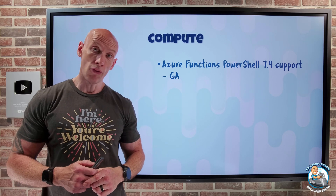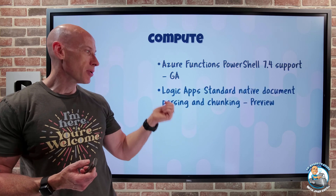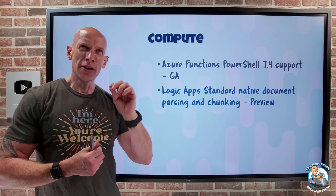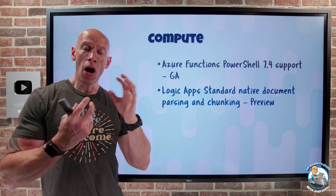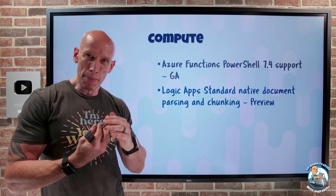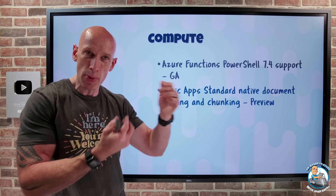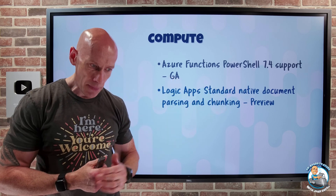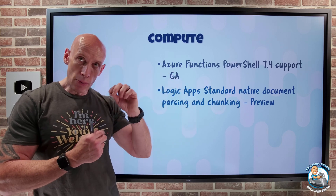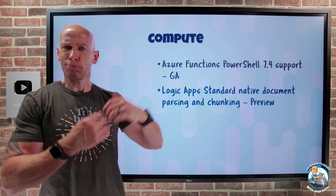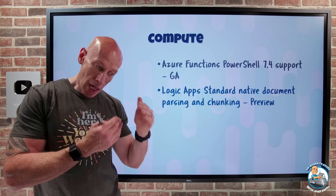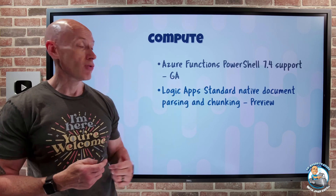Now I can use PowerShell 7.4. Logic Apps Standard now has native document parsing and chunking. When dealing with AI, I very commonly need to parse and tokenize a document. We use tokens that represent a word, part of a word, or a symbol, and we have a limit to how many tokens we can use at once, so we chunk our data into a certain token size. With Logic Apps Standard, we now have data operations that include 'parse a document' and 'chunk text.' Parsing transforms PDF files, CSVs, and other formats into a tokenized string for AI-related APIs, and chunk text lets me stay within a required token limit. That's available in preview.